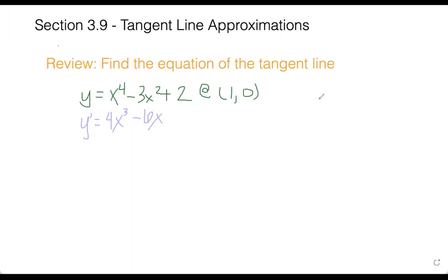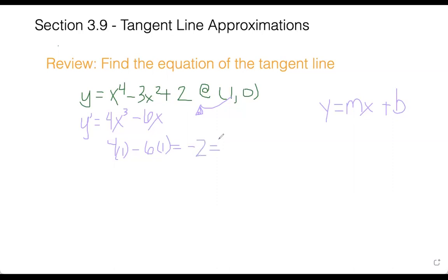Our goal to find the equation of the tangent line is we need y equals mx plus b — we need our m and our b, because it's a line. First thing we do is find the slope by evaluating the derivative at the given point. We plug in x equals 1: 4 times 1 minus 6 times 1, which gives us negative 2. This value is our slope, or our m.